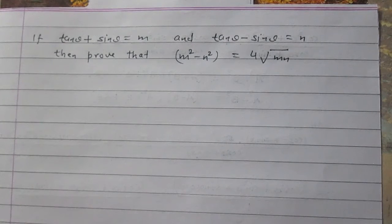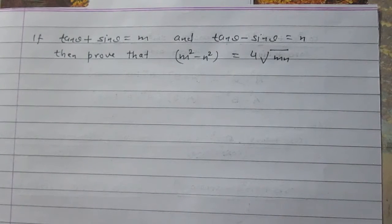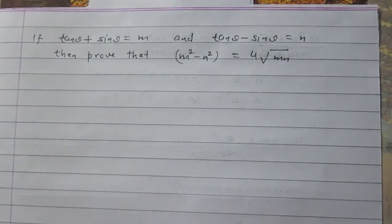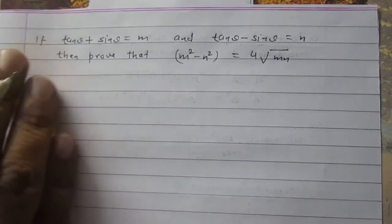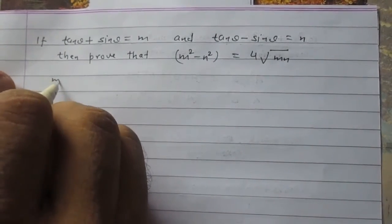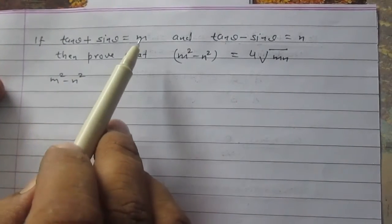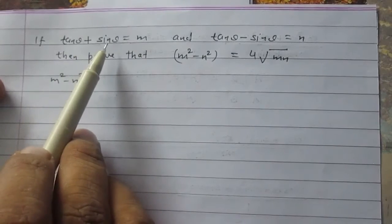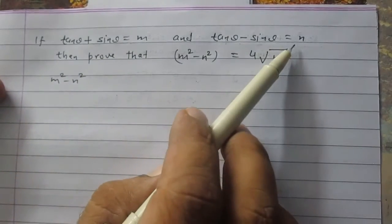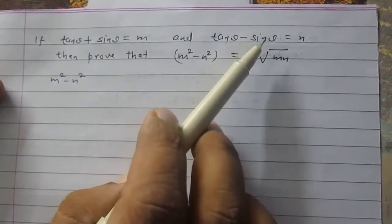If tan θ + sin θ = m and tan θ - sin θ = n, then prove that m² - n² = 4√(mn). Let us consider the left hand side, which is m² - n². According to the question, the value of m is tan θ + sin θ, and the value of n is tan θ - sin θ.